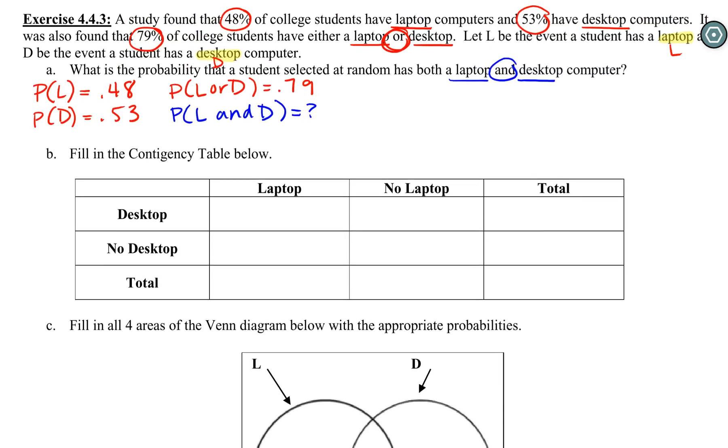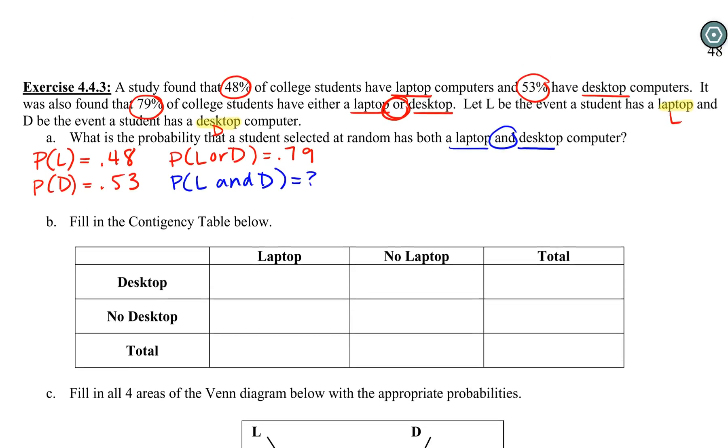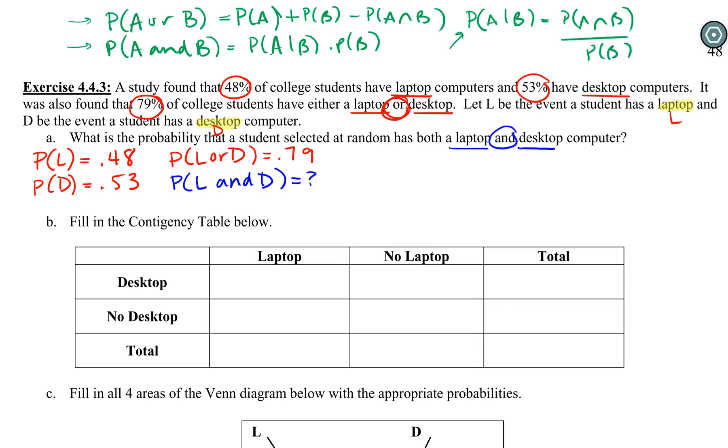I want you to take a moment—if you haven't done this question already, pause the video and see if you can figure out how we're going to find the 'and' probability. A hint would be to look at your formulas. We only have three really big given formulas: our or formula, our and formula, and our conditional formula.